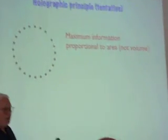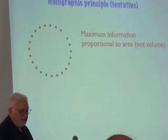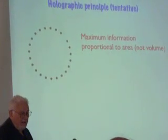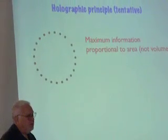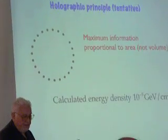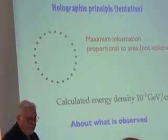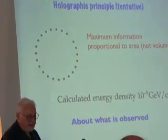That comes from the fact that the most information that you can have in a sphere is a black hole of the same size. And the information in a black hole is proportional to the surface of a sphere. And you calculate that, and you get 10 to the minus 5. Exactly what is observed.